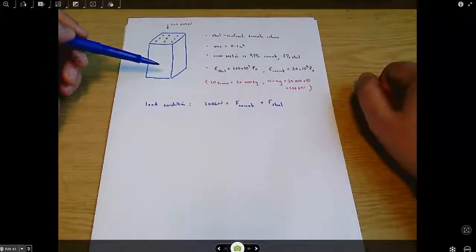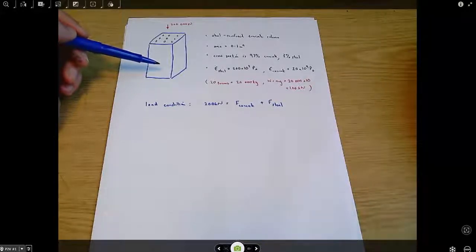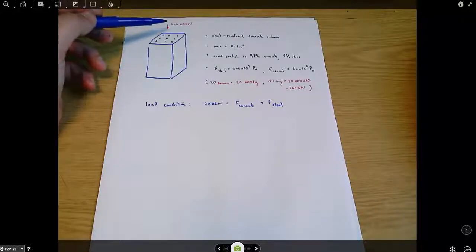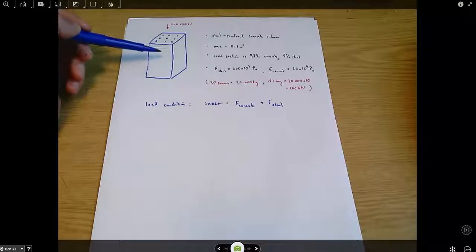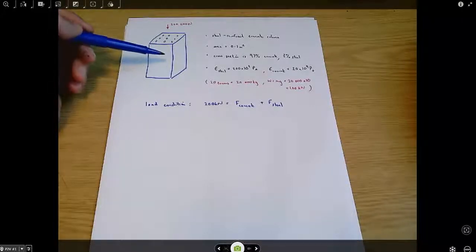The forces acting downwards are that 200 kilonewtons. Forces acting upwards are the resistance from the concrete and the steel, or the compression of the concrete and the steel.